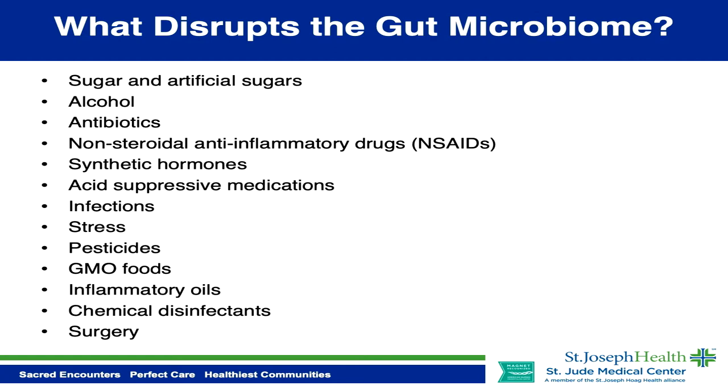So what disrupts the gut microbiome? Sugar — specifically refined sugar — is a big disruptor. It feeds all the bad bacteria in the gut, the kind that cause inflammation, weight gain, and trigger more sugar cravings. Artificial sugars are also bad for the gut microbiome since they often feed bad bacteria and cause dysbiosis. Artificial sugars like xylitol, mannitol, and sorbitol can't be absorbed by the body, leaving them in your gut where bacteria ferment them into gas and cause bloating.